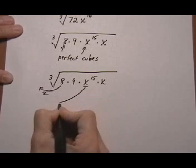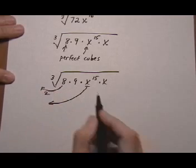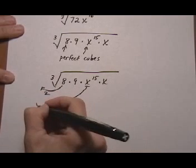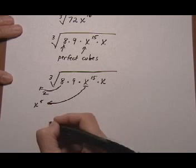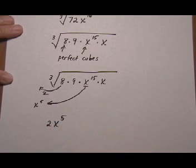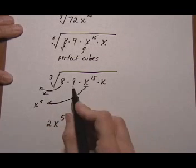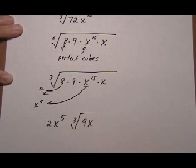So this guy comes out as a 2 because cube root of 8 is 2. This guy comes out, cube root of x to the 15th, do 15 divided by 3, power divided by root. And that gives me an x to the 5th. So on the outside we get 2x to the 5th, and then the 9 and the x are just leftovers. They stay inside the cube root, and we don't do anything to them.